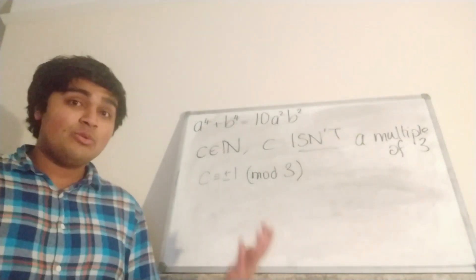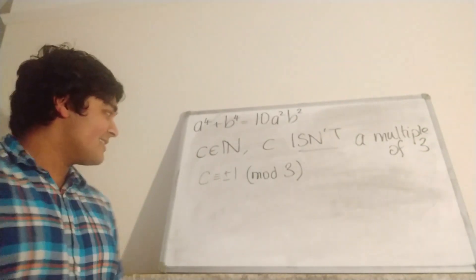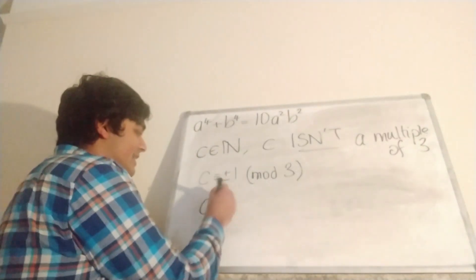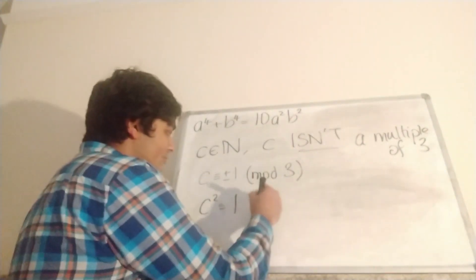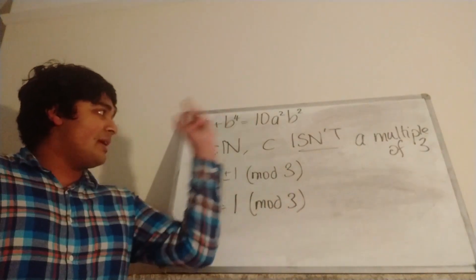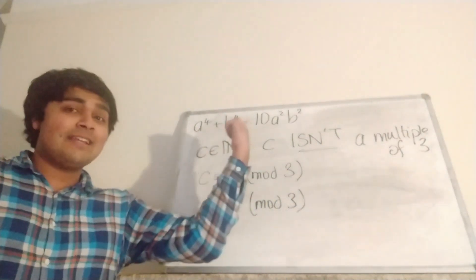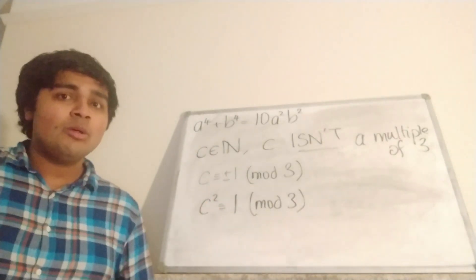So now all we've got to do is just square both sides, and then hopefully things will start to make sense. So if we square both sides of this thing here, C² is congruent to (±1)² mod 3, but that's always going to be 1 mod 3. So basically I'm saying that if we have any natural number that isn't a multiple of 3, when you square it, you're going to get something that's congruent to 1 mod 3.